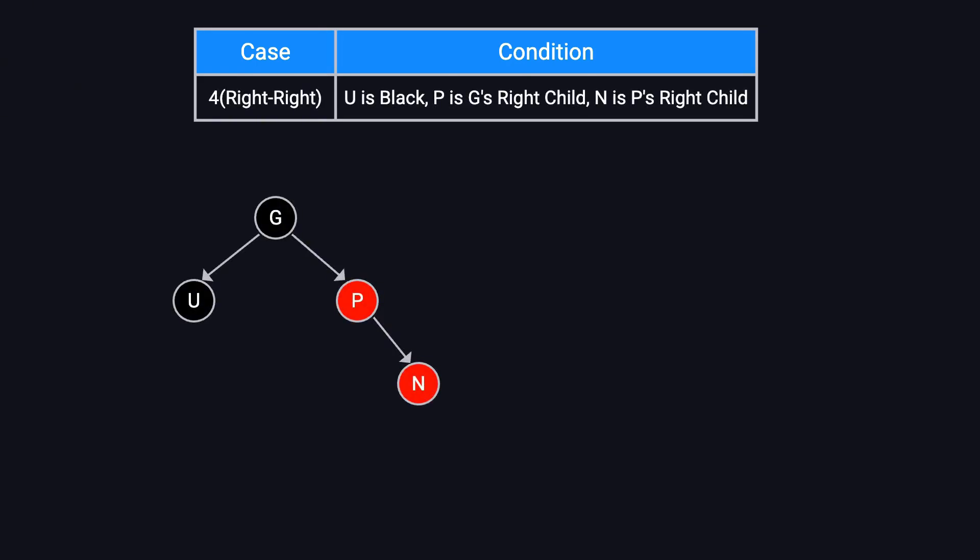Case four. Also called right-right. In this case, U is black, P is G's right child, and N is P's right child. This is the mirror image of case three. To fix this, we also take three steps.